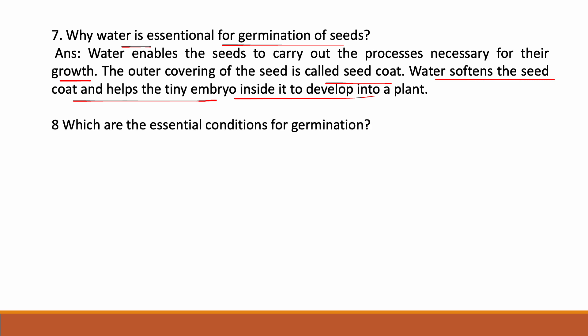What are the essential conditions for germination? Water, air, soil, and light or dark conditions. Some seeds need light for germination, while some seeds need darkness for germination.